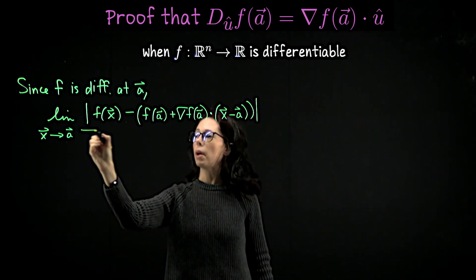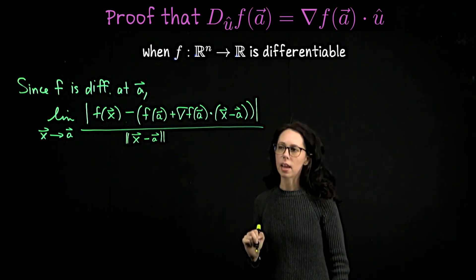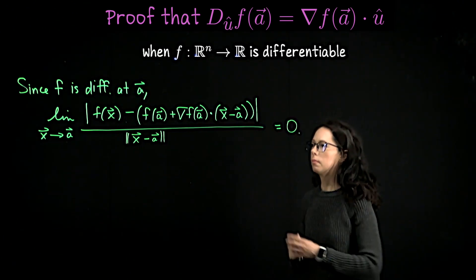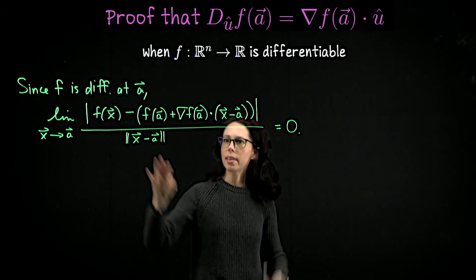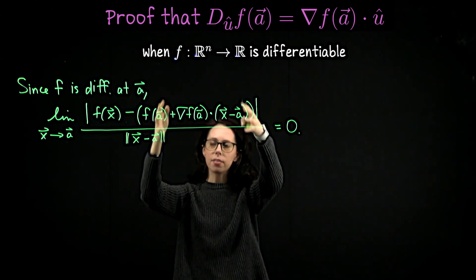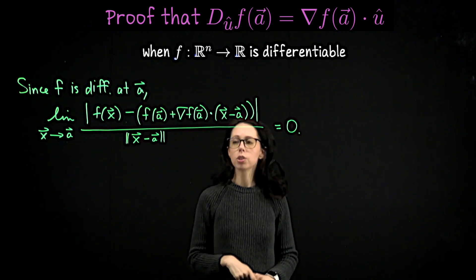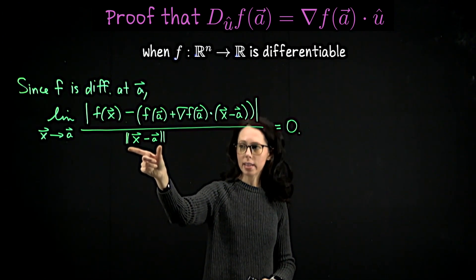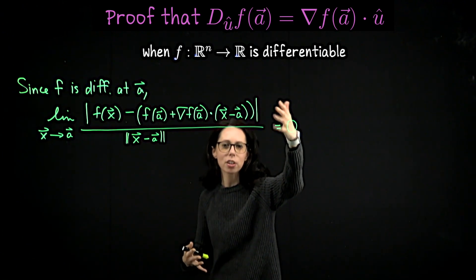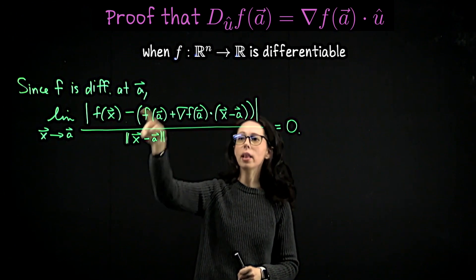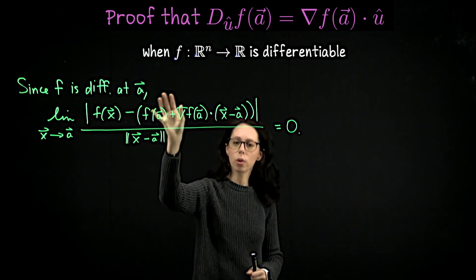This distance divided by the distance between x and a exists and goes to zero. When a function is differentiable at a point a, as x approaches a, the distance between the function's actual value at x and the first-order approximation — the tangent line or tangent plane approximation centered at a — is so small that when we divide it by the distance between x and a, the ratio goes to zero. The numerator goes to zero faster than the denominator. This says f is really well approximated by its first-order approximation, and that's what it means to be differentiable.